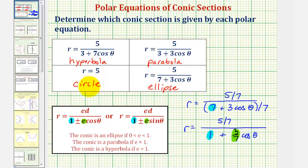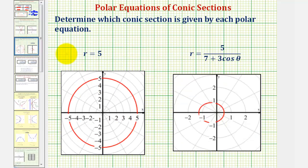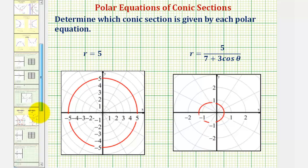Let's look at the graphs of these last two equations. Here we have r equals five, which is the circle with eccentricity of zero. And here's the graph of the ellipse, where the eccentricity was between zero and one. I hope you found this helpful.